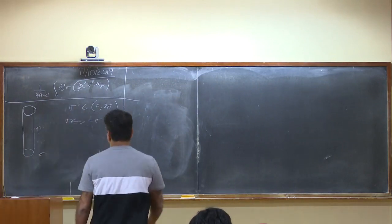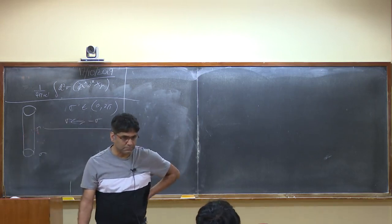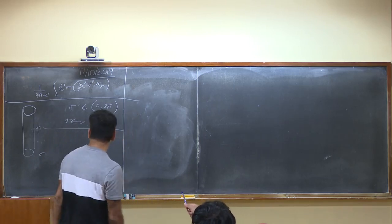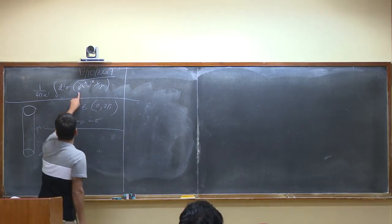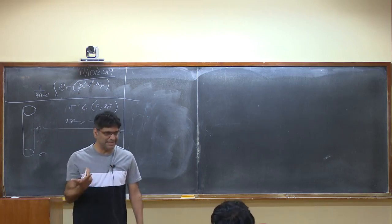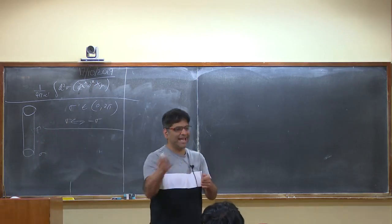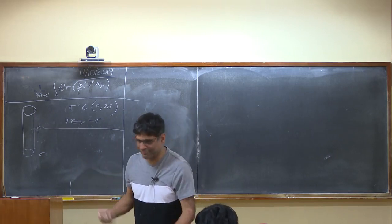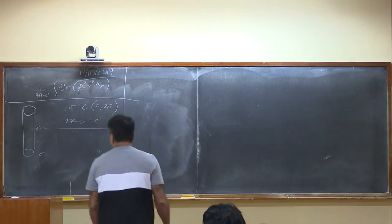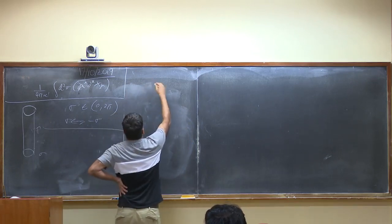Now what we're going to do is spend two minutes seeing how this parity flip acts on the mode expansion oscillators. We're choosing to flip σ only, not τ — it's a parity transformation that takes x to minus x without putting t to minus t, the usual parity symmetry of parity-invariant theories.